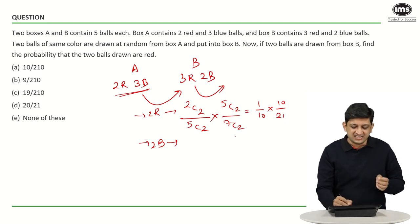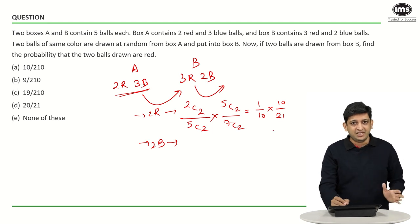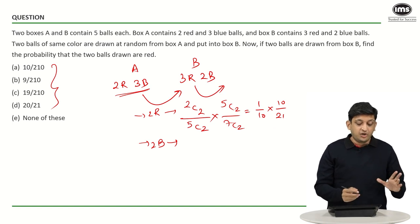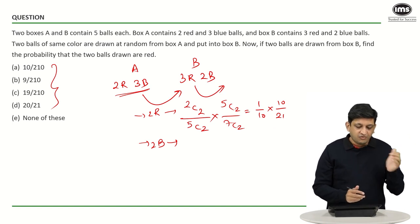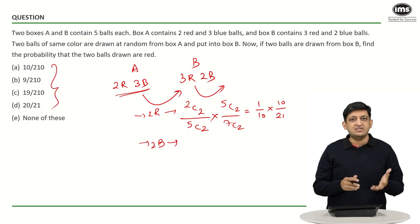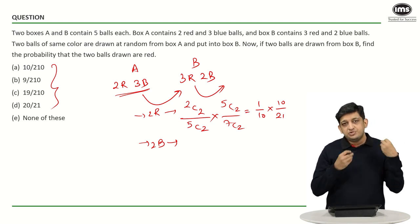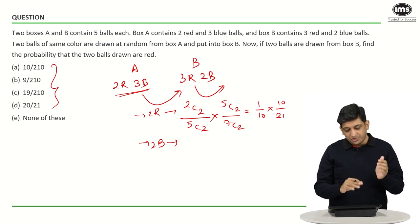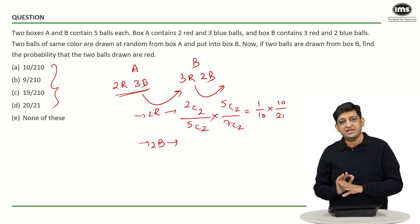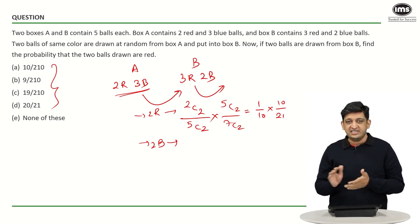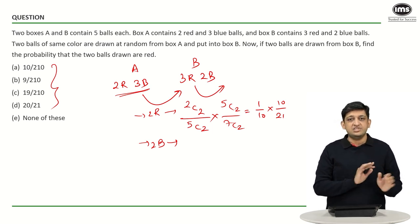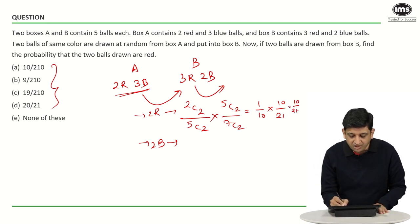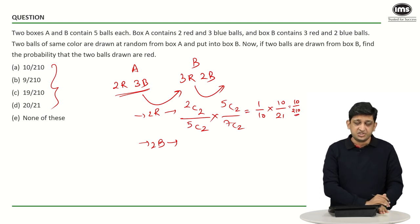You might be tempted to cancel the 10s and write the answer as 1/21. But before that, look at the options: one is 10/210, one is 9/210, one is 19/210, and the fourth is 20/21 which you can write as 200/210. Instead of simplifying here, keep it as 10/210 for the time being and then see what happens in the second case. So the first part of the answer is 10/210.